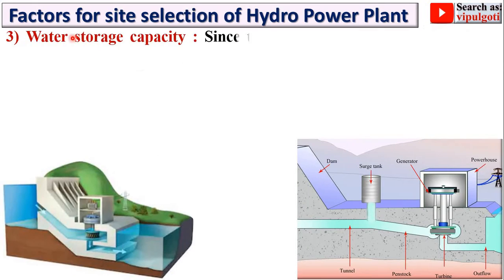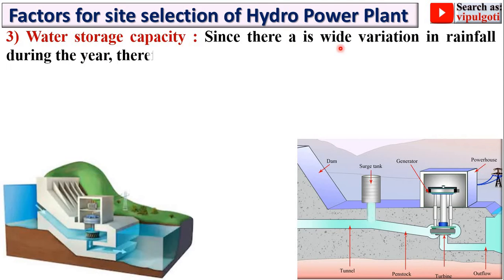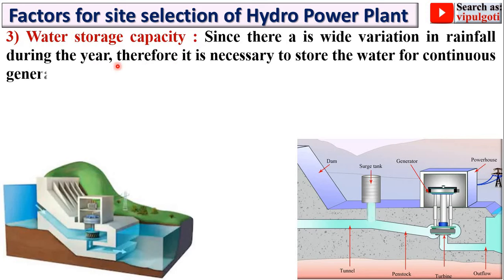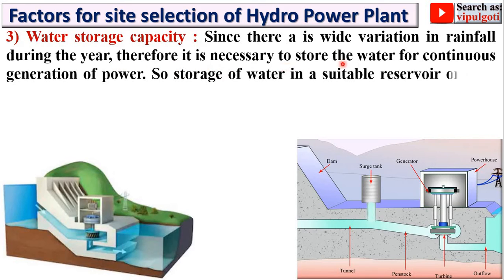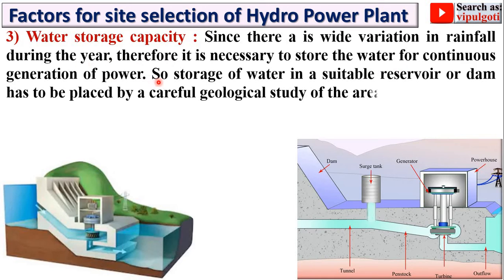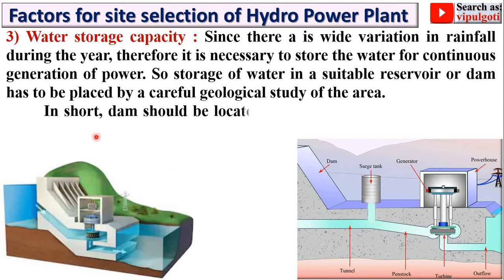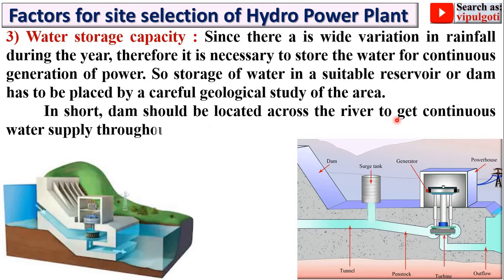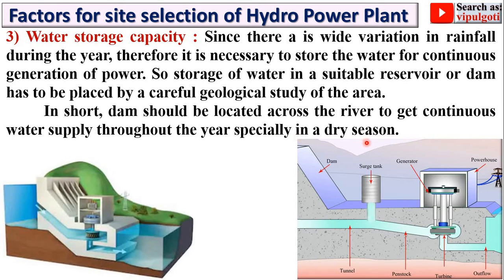The next point is water storage capacity. Since there is a wide variation in rainfall during the year, it is necessary to store water for continuous generation of power. Storage of water in a suitable reservoir or dam has to be planned based on a careful geological study of the area. To store more water, you have to examine the geological study of the area. The dam should be located across the river to get continuous water supply throughout the year, especially in the dry season.